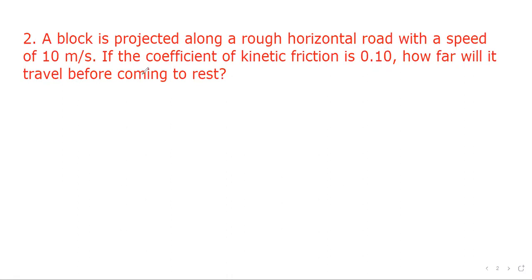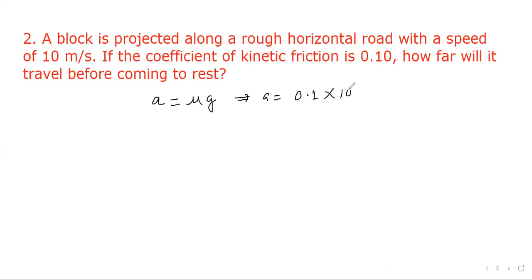Next question: a block is projected along a rough horizontal road with a speed of 10 meters per second. The coefficient of kinetic friction is 0.1. How far will it travel before coming to rest? We know a = μg, so a = 0.1 × 10 = 1 meter per second squared. This is the deceleration.